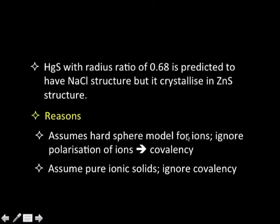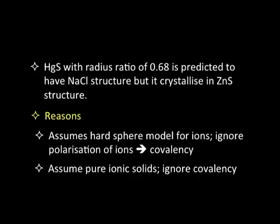The reasons for deviations from the radius ratio rules are that when we talk about these rules we have taken ions to be hard spheres and ignored that ions can get polarized. An anion has a nucleus and a large electron cloud, and a positive cation nearby can polarize the anion, introducing a certain element of covalency. We do not have 100 percent ionic compounds; there will be some element of covalency which is not considered by the radius ratio rules. Essentially they assume pure ionic structures and ignore covalency. Furthermore, radius ratio rules predict only one structure, ignoring phase changes, since certain ionic solids can adopt different phases. These are the limitations of radius ratio rules.